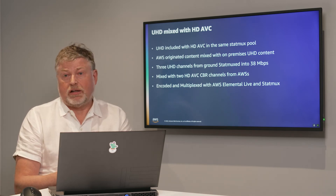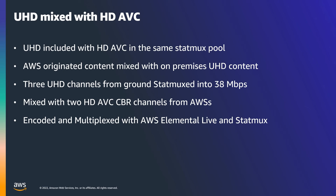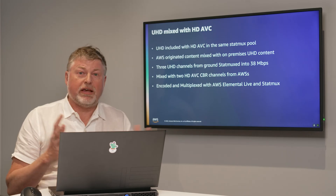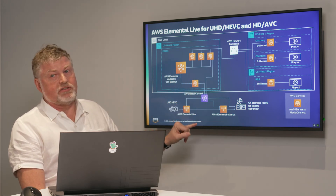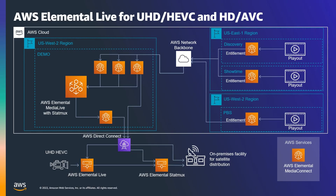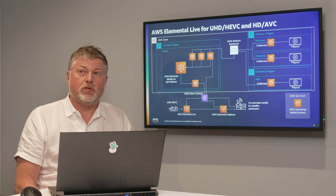Not only can we do all this multiplexing in the cloud, we can also combine this workflow with processing on the ground. In this case, we have Ultra HD encoders and channels generated on the ground, and they want to create a statmux system of those as well and combine that with content originating in the cloud. What we're doing here is creating a 38 megabits statmux system with three high-definition channels and two HD channels, mixing all that together on the ground. The acquisition piece remains the same, but on the ground we now have a statmux system running. We collect some of the channels from the cloud and send them down at mezzanine level to the ground, feeding that into the encoder and statmuxing everything together. This shows how you can combine cloud and ground-based workflows to optimize your distribution needs.